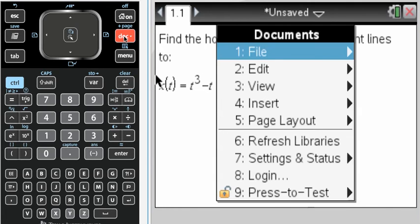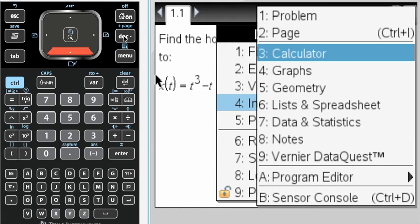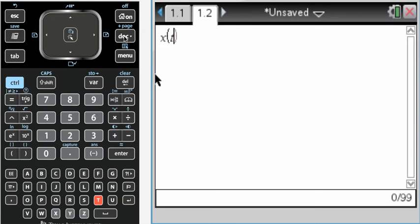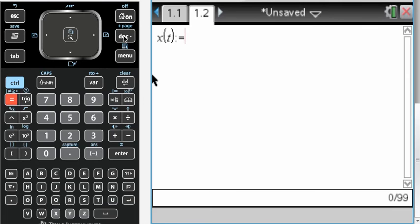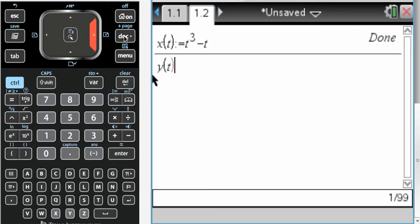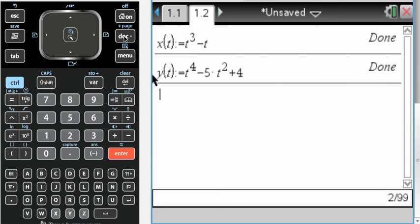So what I'm going to do is insert a calculator page and first define the functions. So x of t is t cubed minus t, and y of t is going to be a little easier to work with if I do this. So t to the fourth minus 5t squared plus 4.